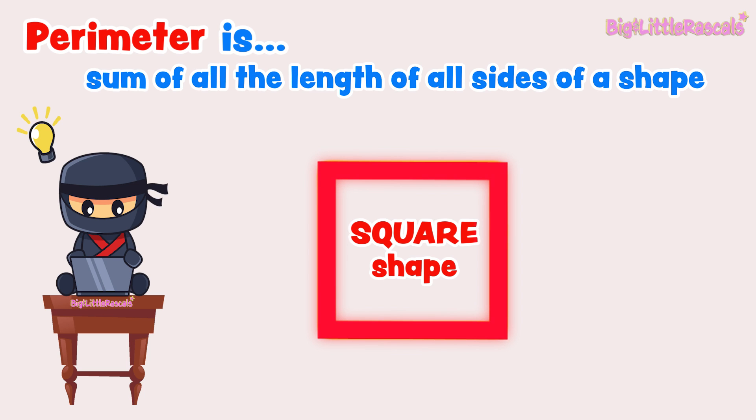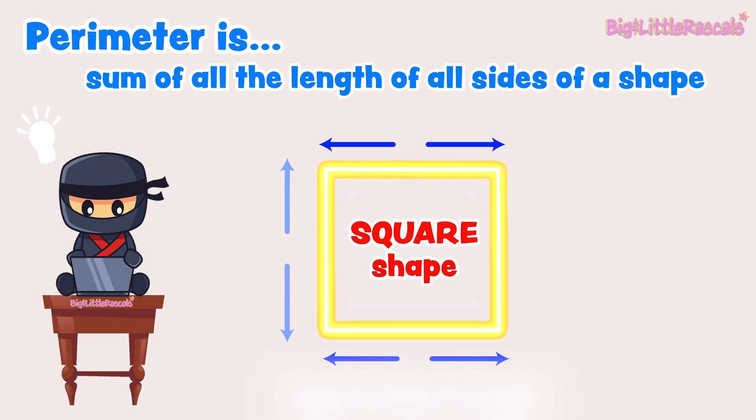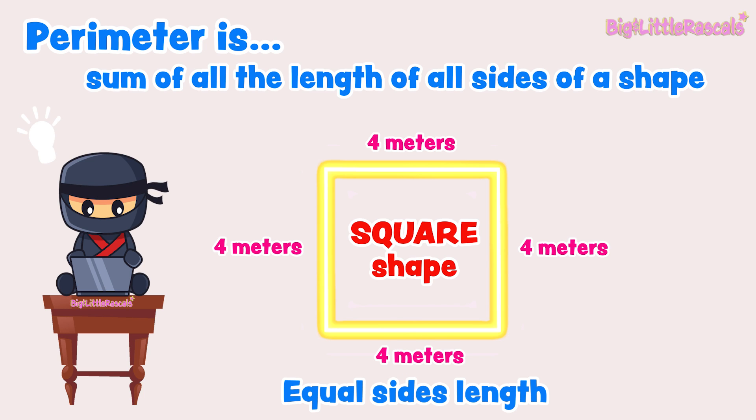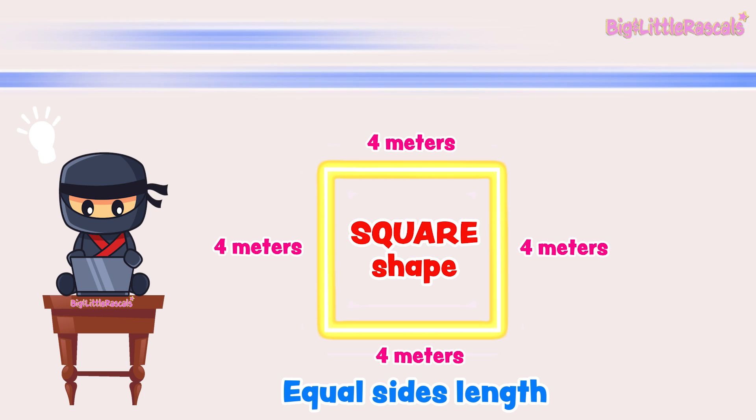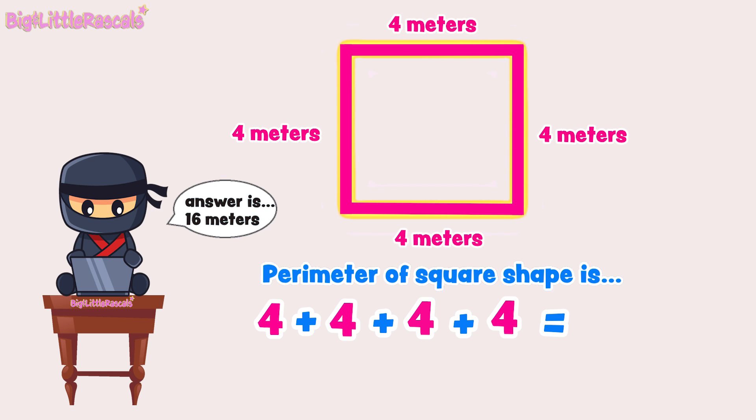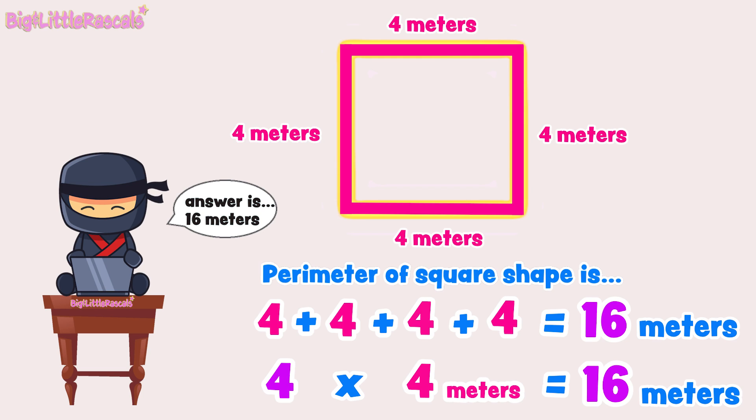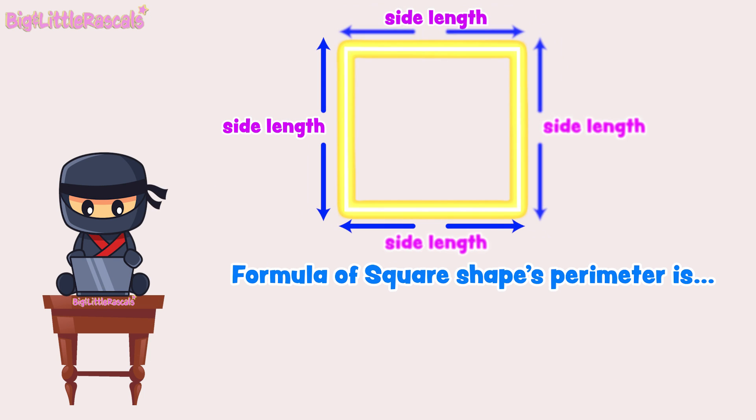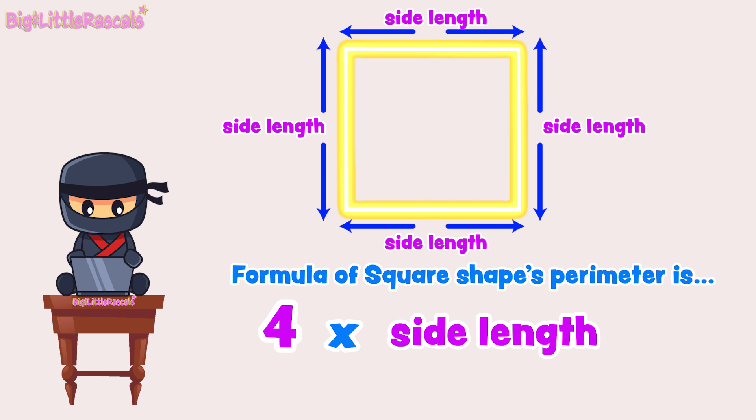Let's first investigate this square shape. This square shape has four equal length of sides: 1, 2, 3, and 4. In this square, each side length is 4 meters long. So what is the square's perimeter? 4 plus 4 plus 4 plus 4 equals to 16 meters. Or if we use multiplication, then 4 sides of 4 meters equals to 4 multiplied by 4 meters equals to 16 meters. So the formula for square shape perimeter is 4 times side length. Great work Ninja!